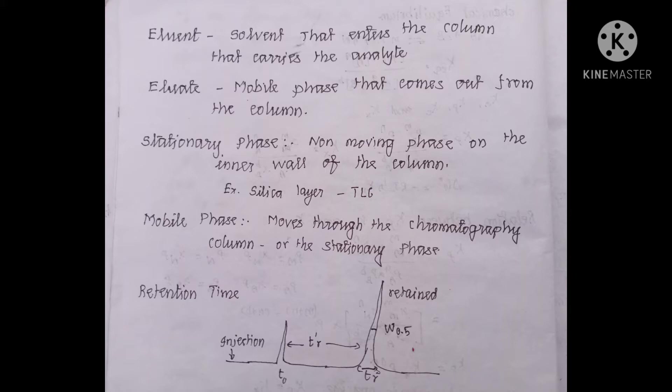First, we will see about the eluent. The eluent is a solvent — it may be the mobile phase — that enters the column along with the analyte solution. The analyte is carried throughout the column. We are injecting it from the top of the column along with the analyte. That is called the eluent.